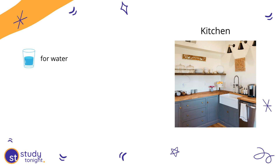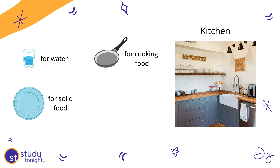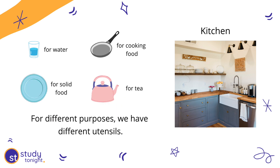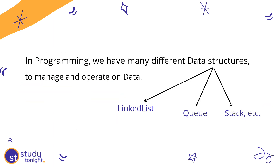Imagine your kitchen. You have different utensils for different purposes — a glass for liquids, plates, big vessels to cook food, a kettle to store and serve tea or coffee. Based on different purposes, we have different utensils. Similarly, in programming, based on the use case, there are different ways to store and manage data — in short, to structure the data. There's a queue data structure where data stored first comes out first, so for sequential applications we can use a queue.